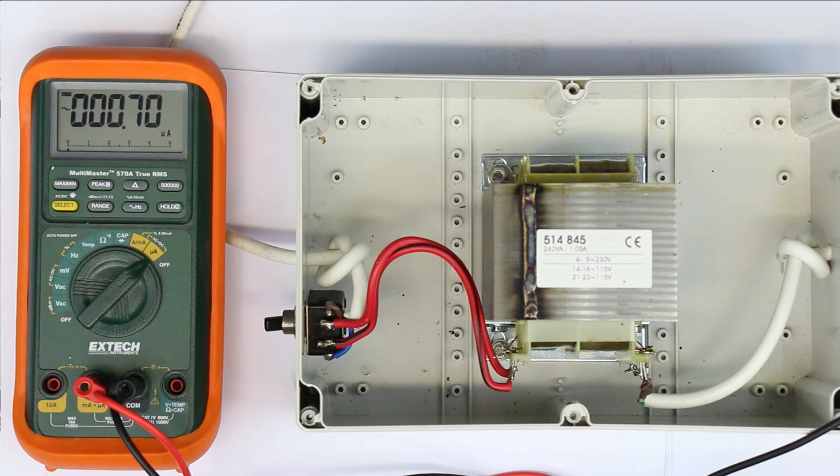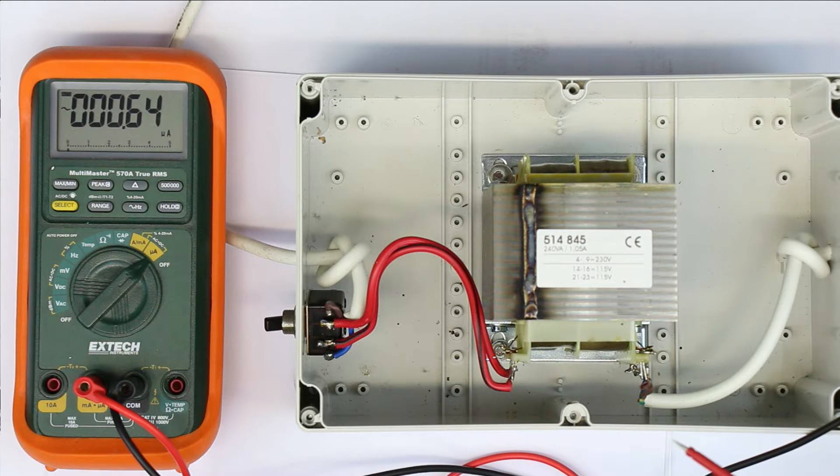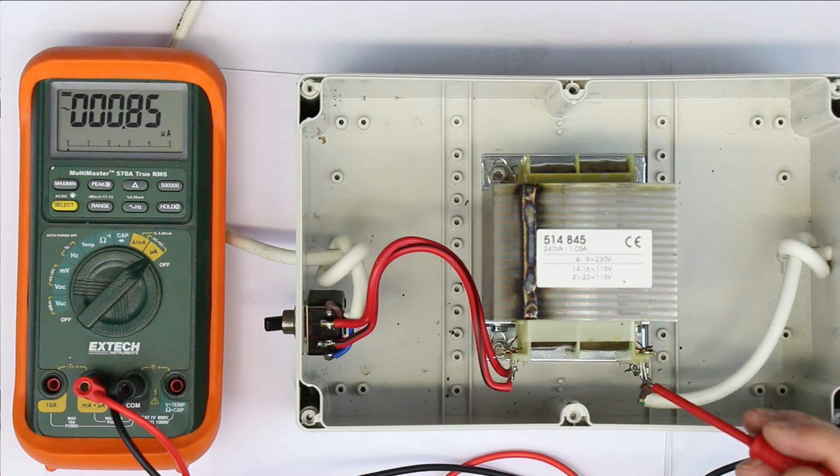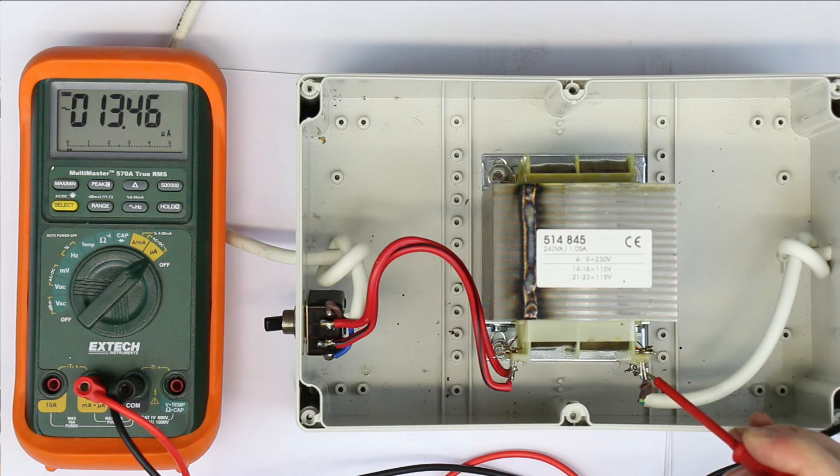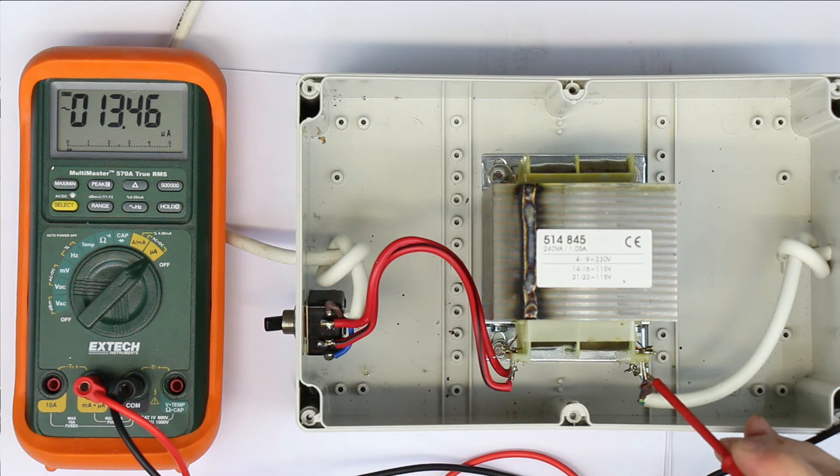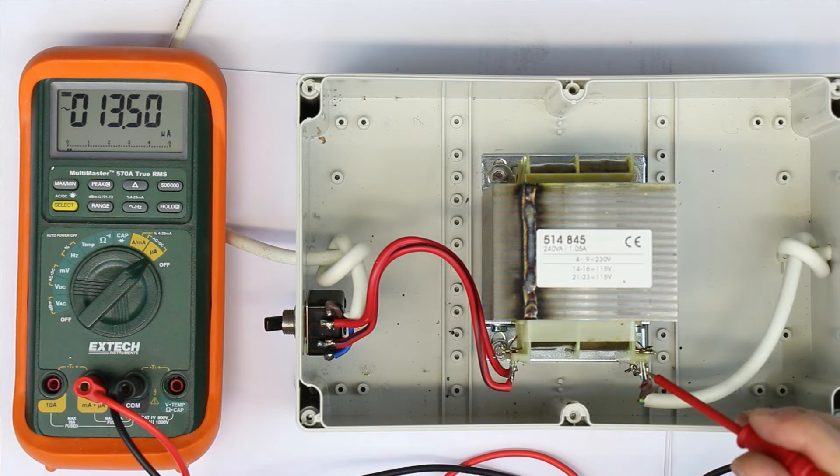Here we have the primary side, here we have the secondary side, and you can see the display is below one microamp. Now we connect the red line with the secondary side, and what do we get? 13 microamps flowing. How is that possible that current is flowing, AC current is flowing?